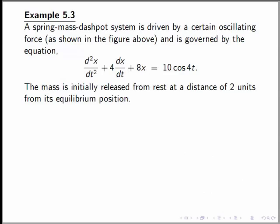Let us look at an example of such a system in example 5.3. We are told that a mass is initially released from rest at a distance of two units from the equilibrium. What does this tell us about the initial conditions? You may wish to think about it first.